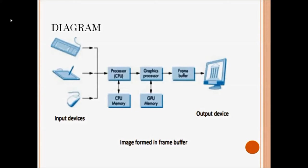First, I write the application or program using any one of the input devices. That program is passed into the processor — the CPU. The CPU does some computations in its own memory. Then the computation results are passed into the graphics processor, which performs graphics-related tasks. I will explain those tasks in detail later.